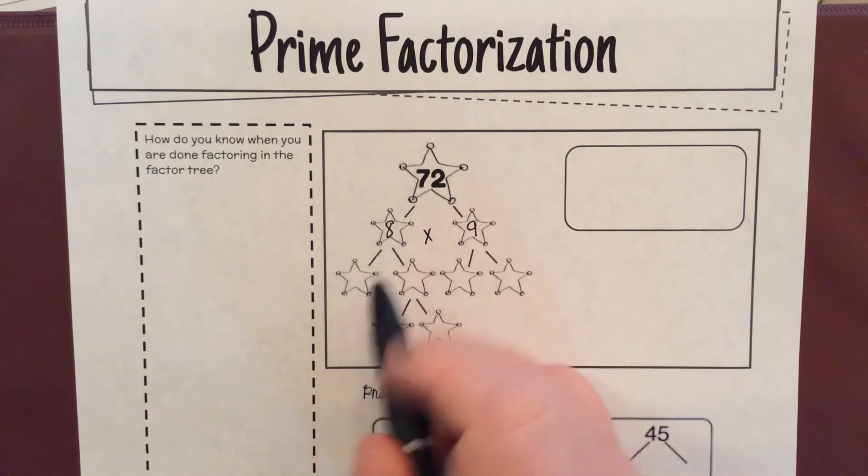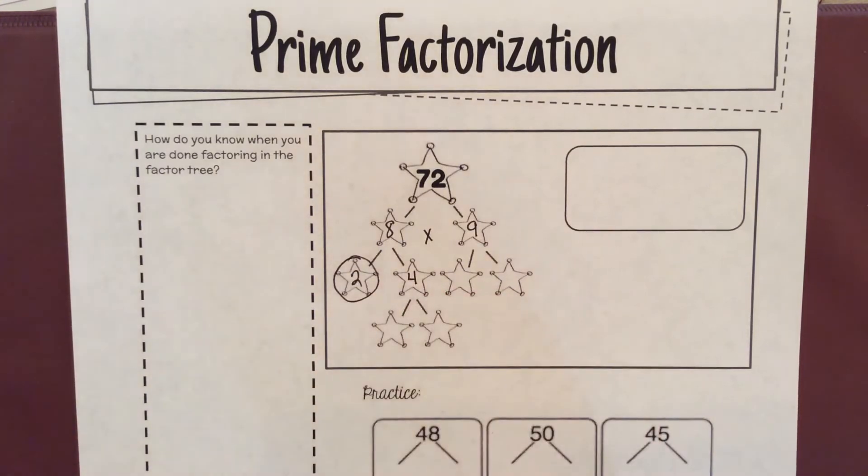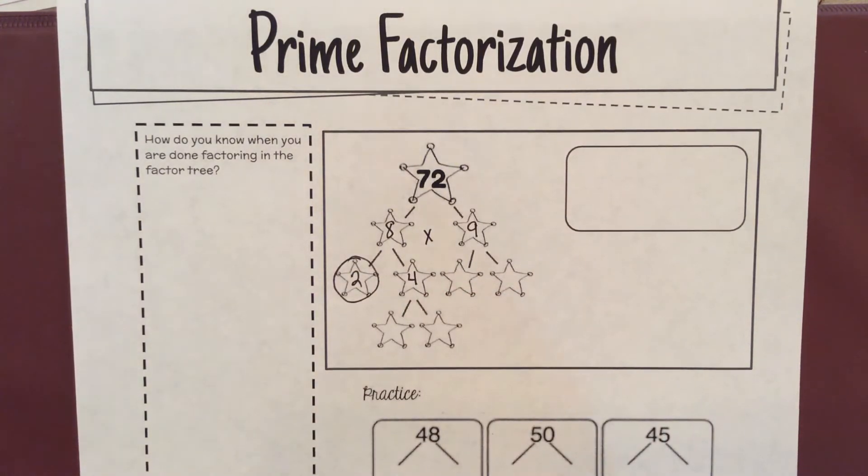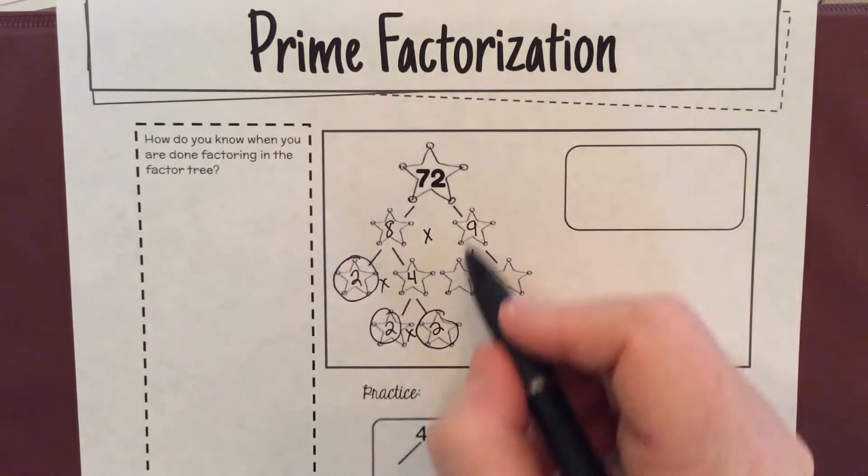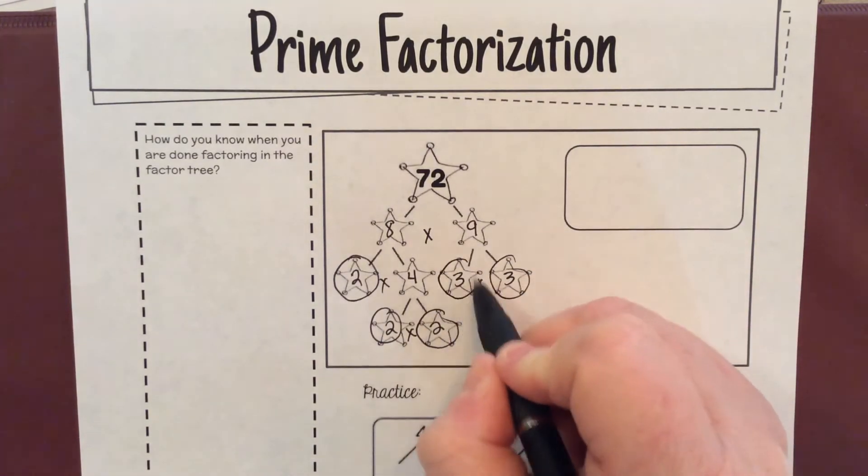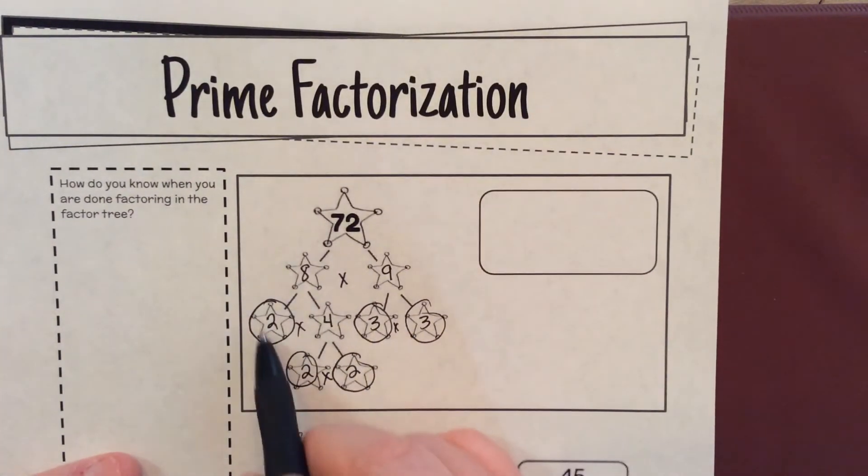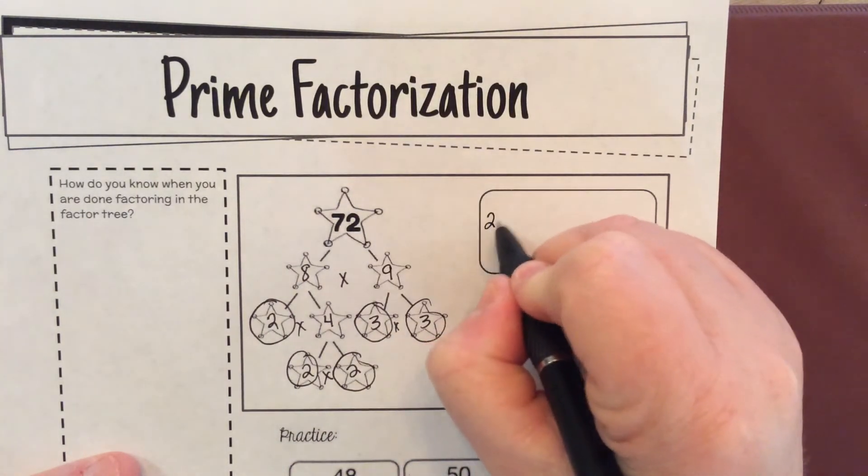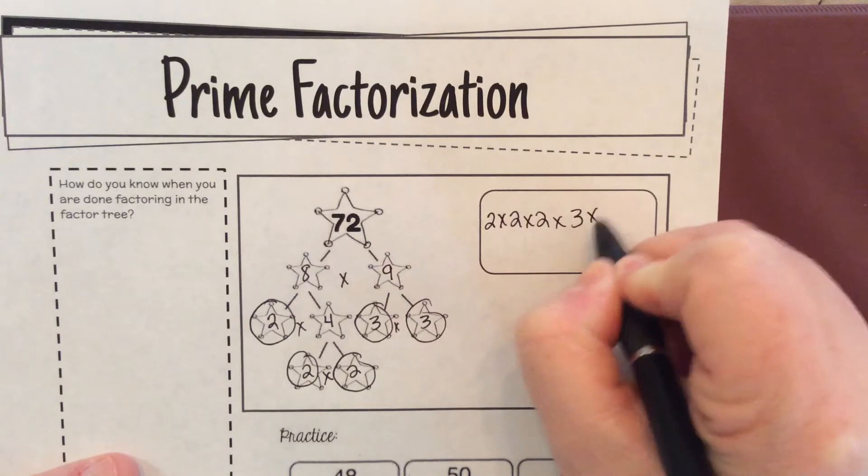Now eight is made up of two times four. Two is prime, so I circle it because that's the only thing that goes into two is one times two. Four is made up of two times two. They're both prime. I'll put my multiplication symbols there. Nine is made up of three times three, and they're both prime. My answer is not done. So what I'm going to have to do is go over here, and I'm going to write my numbers in numerical order.